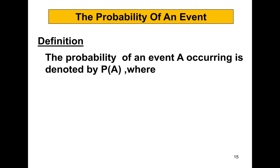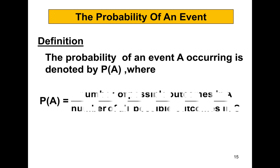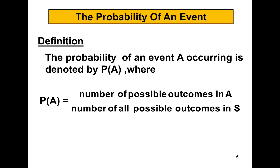The probability of an event A occurring is denoted by P(A), where the probability of A is equal to the number of possible outcomes in A over the number of all possible outcomes in S, which is the sample space. Therefore, the probability of A is equal to n(A) over n(S).